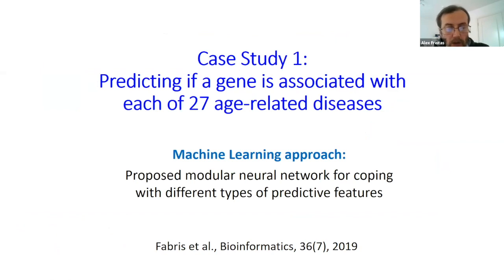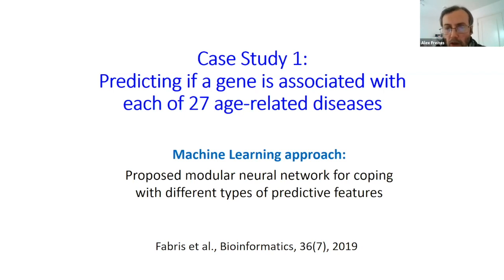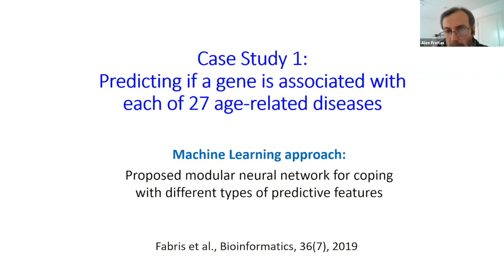The rest of the talk is an overview of three case studies involving the application of machine learning to data about the biology of aging. The first case study involves predicting if a gene is associated with each of 27 aging-related diseases. In the spirit of understanding aging from a systemic and holistic perspective, we try to find commonalities and differences between genes that predict those diseases as a whole. The machine learning approach used is a modular neural network for coping with different types of predictive features.